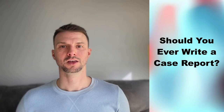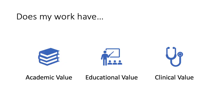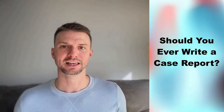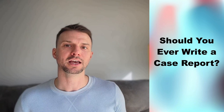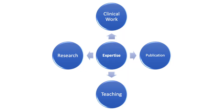The first step in any publication is to ask yourself: where is the academic, educational, and clinical merit of the work I'm doing? If you can easily answer that question, push forward and continue doing what you're doing. However, if you're struggling to see any academic, educational, or clinical merit, you might want to ask yourself why you're doing it. Most authors are very limited in the amount of time, energy, and resources they can spend on academic work, so it's important to do work that fits and contributes to a larger, bigger picture.